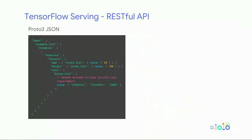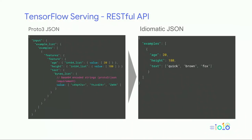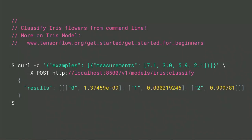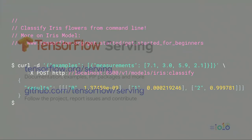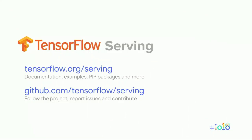If you're familiar with TensorFlow Example, representing it in JSON is cumbersome and verbose, requiring things like base64 encoding. With TensorFlow Serving, the RESTful API uses a more idiomatic JSON, which is much more pleasant and succinct. You can even use curl to make predictions from the command line. Check out the project at TensorFlow Serving — there's lots of documentation, and we welcome contributions and code discussion on our GitHub project page.